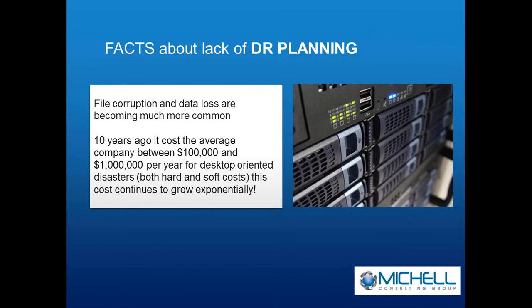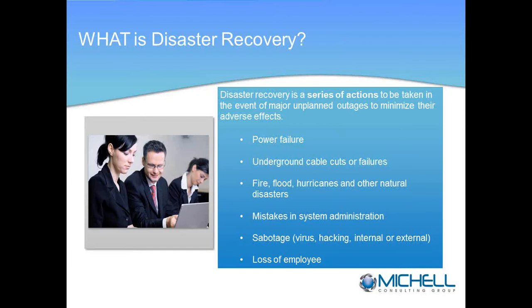The whole idea is to improve your odds, to take the right measures to make sure that you are not in that statistic. File corruption and data loss are becoming much more common. Going back 10 years ago, the average company would have to spend between $100,000 and $1,000,000 a year for just desktop-oriented disasters — both hard and soft costs. And that cost is growing exponentially; you can just about triple that cost right now.